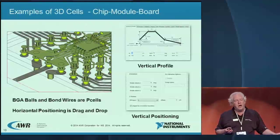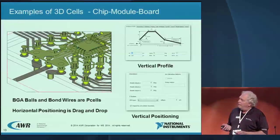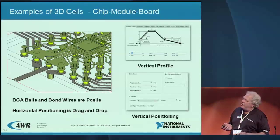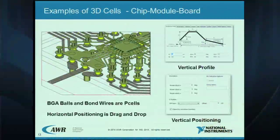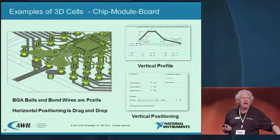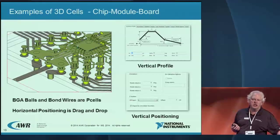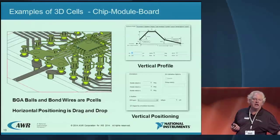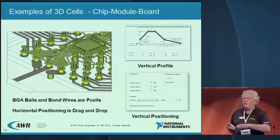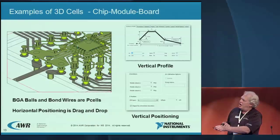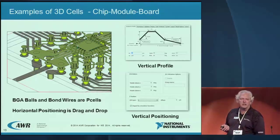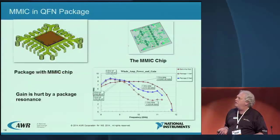Here's an example drawn and simulated in our software: going from a board with a wave port up through BGA balls, over bond wires, to a chip through a module. This was drawn entirely in a 2D editor — this person never went to a 3D editor. The balls and bond wires were P cells; they just grabbed them from the library. If they want to change the shape of the bond wire, there's a simple menu to do it.